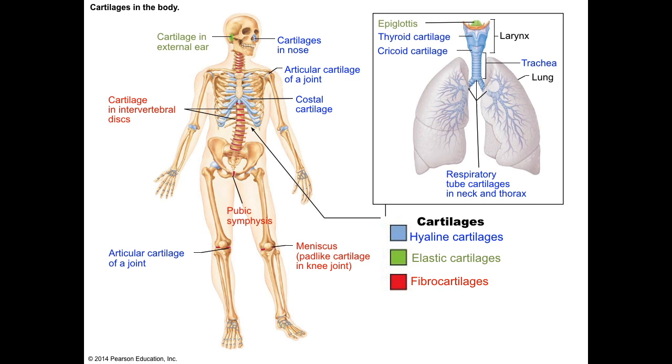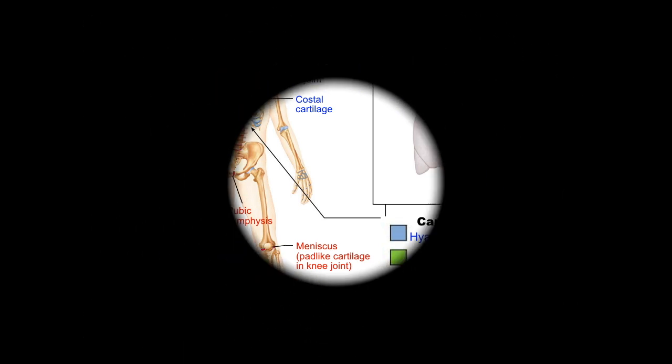So those are the three types of cartilage, their locations, their general features, and next we're going to look at its close relative, bone tissue. See you next time.